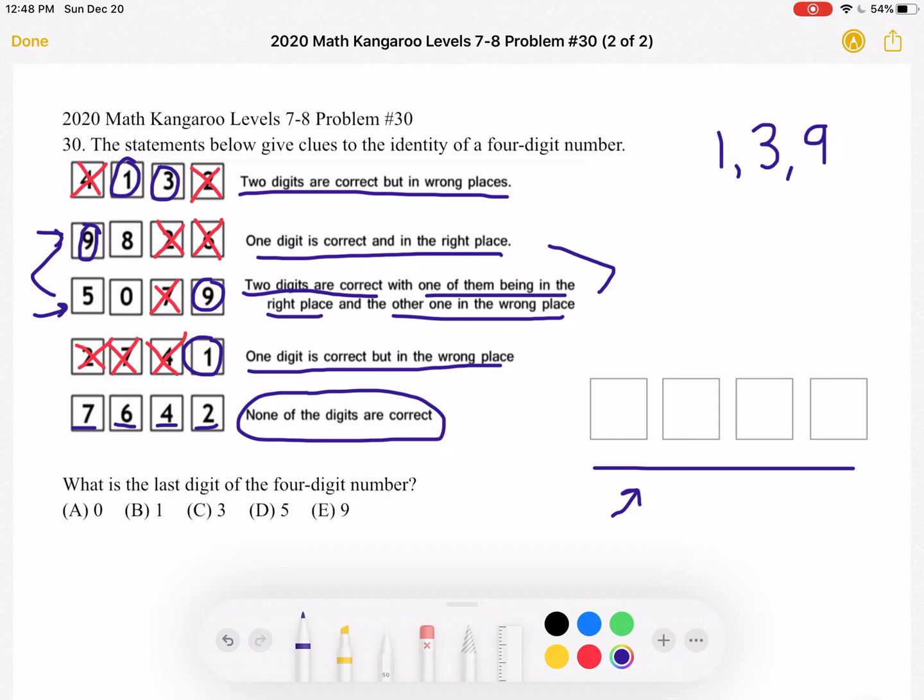Now let's think about where we can place the 1. We know that the 1 is not in the second place because of this statement right here. It says they're in the wrong place. So the 1 is not in the second place. And from this statement over here, we know 1 is not in the fourth place.